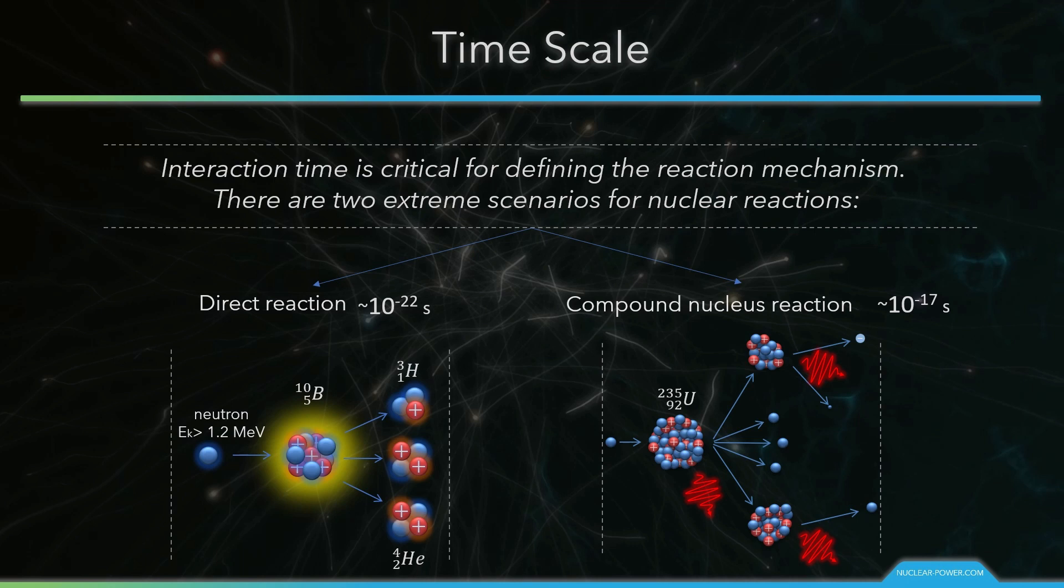In this reaction, an incident neutron enters the heavy target nucleus of uranium-235, forming a compound nucleus uranium-236 that is excited to such a high energy level that the nucleus splits into two large fission fragments. The highly excited compound nucleus of uranium-236 is also called nuclear resonance.